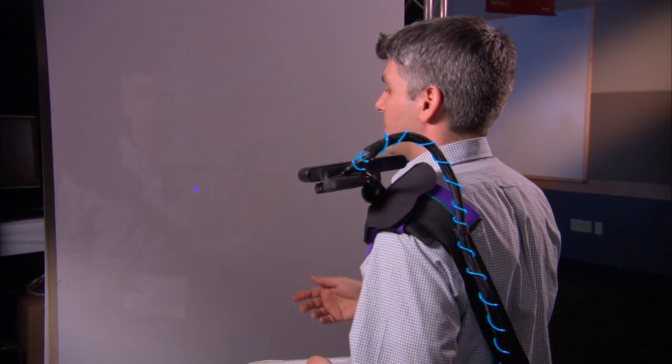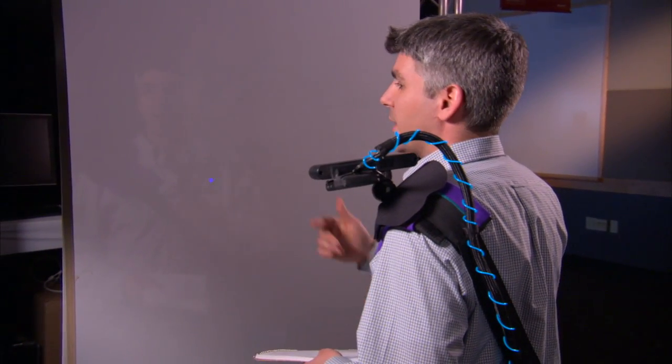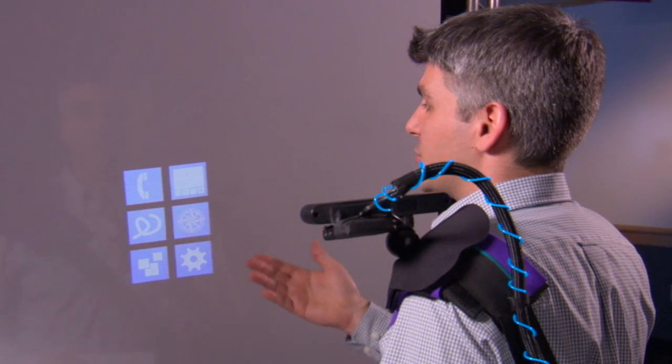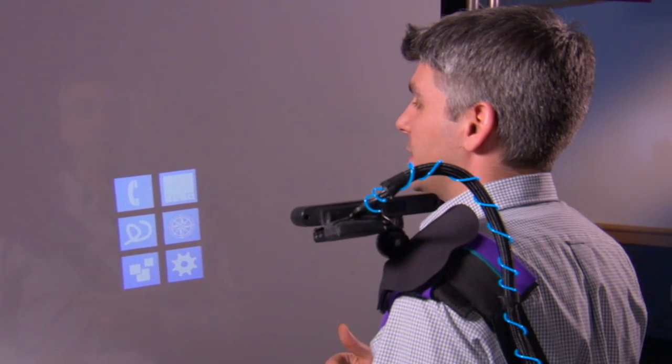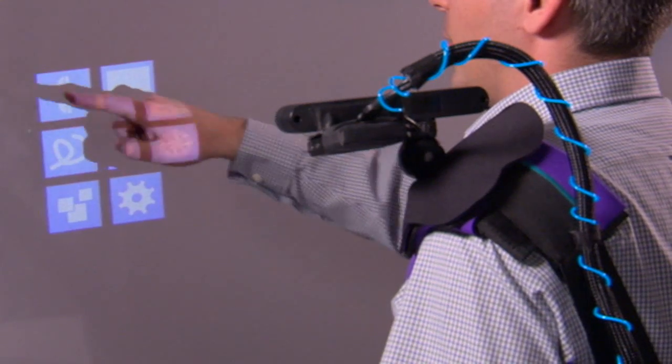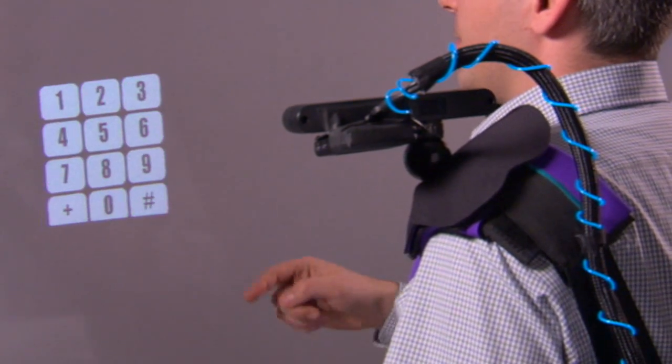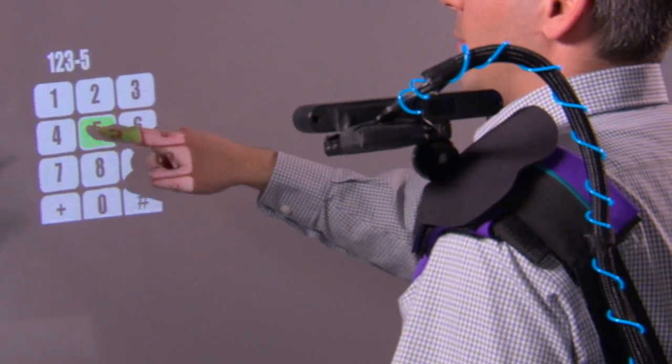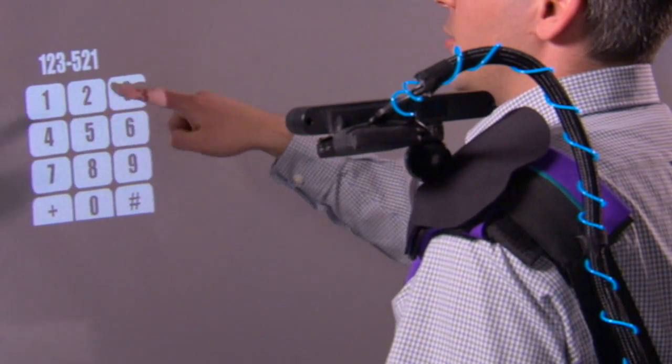If you happen to be right in front of a wall, and you want to get some interface there, all you need to do is just touch the wall, and you get something that could be actually on your smartphone, but it's now just projected in space on the surface. You can literally select an option from that, and then, for example, dial a phone number, just the same way that you would on a smartphone.